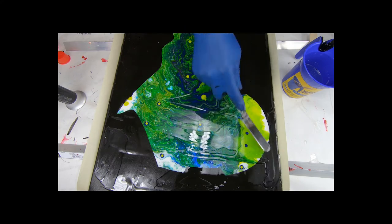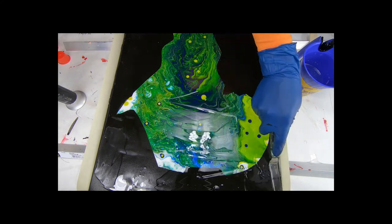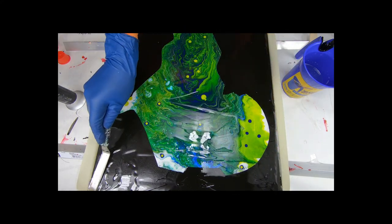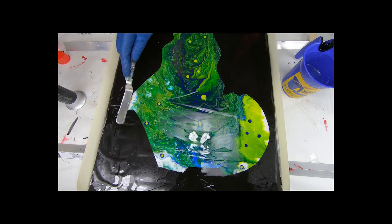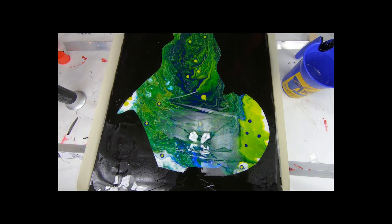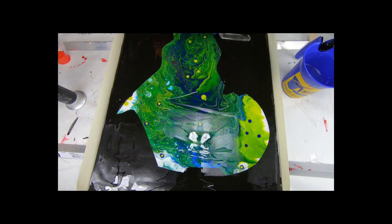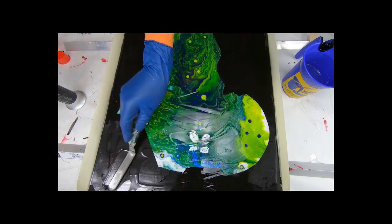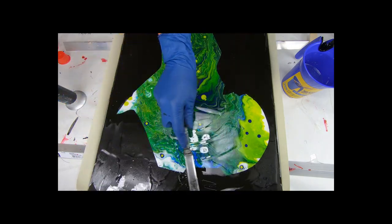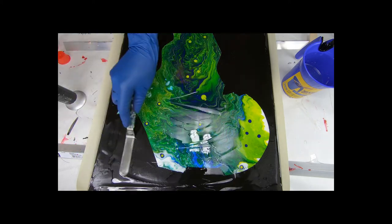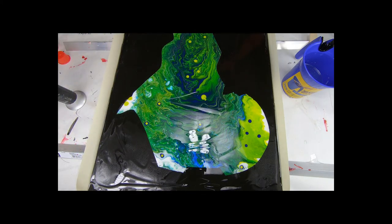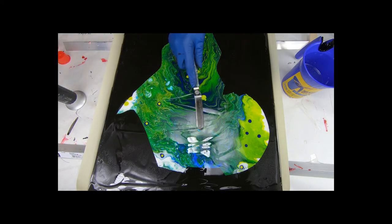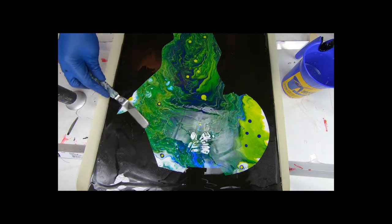But you gotta babysit it for another hour because it drips. And every time it drips, you gotta wipe down the canvas on the bottom. Because if you don't wipe it, it's gonna get hard and then it'll leave the residue on the back side of the canvas and it doesn't look good. So you have to babysit it for about almost an hour or an hour, keep wiping it down and making sure that you don't have drips.